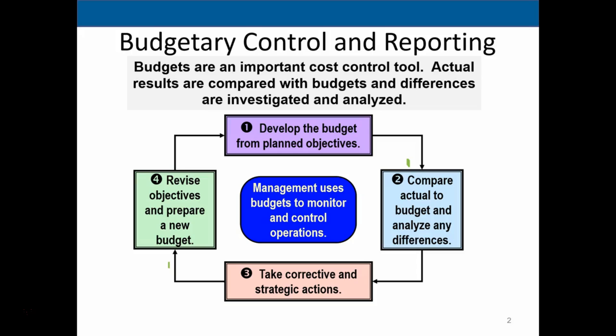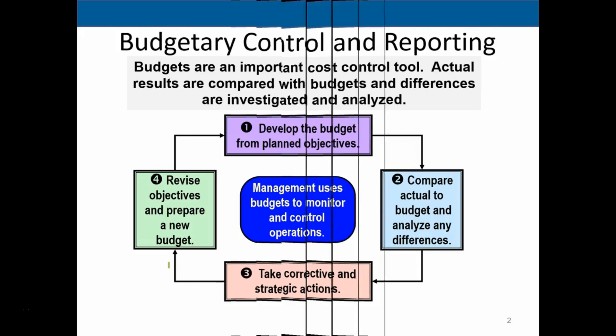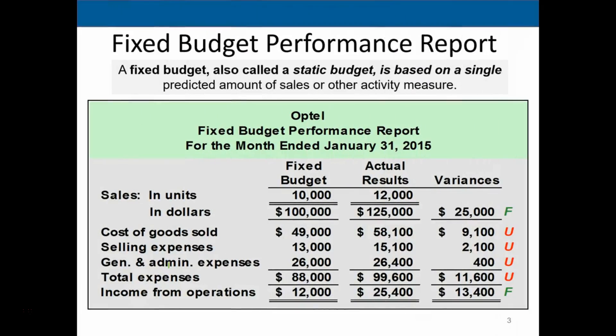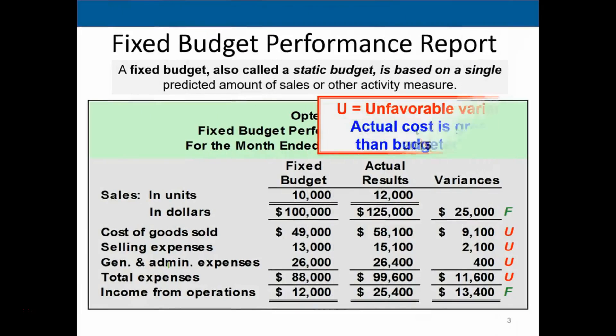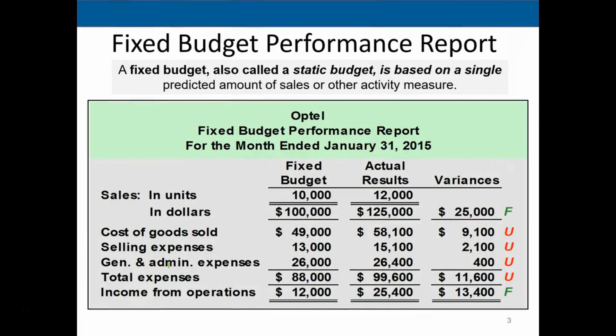We're going to continually budget, run it, compare the budget to the actual, see if we need to take any corrective action, and then run it again. If we have a fixed budget performance report, it looks something like this. We'll start with a fixed budget report and then talk about the ideas on making that fixed budget a flexible budget.